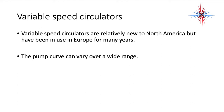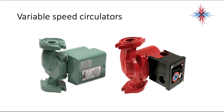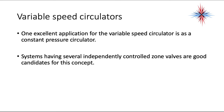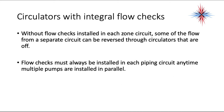Variable speed circulators are available and relatively new to North America, though they've been used in Europe for years. The pump curve can vary over a wide range of speeds, and manufacturers such as Taco and Grundfos now offer variable speed models. One excellent application is a constant pressure circulator, which is well-suited for systems with several independently controlled zone valves.